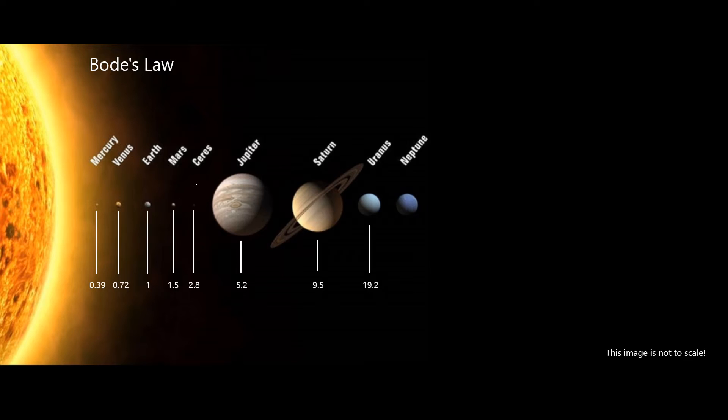About 30 years before Ceres was discovered, astronomer Johann Bode popularized a rule you can use to figure out seven of the eight planets distances from the Sun. This is now known as Bode's law, and it goes like this.